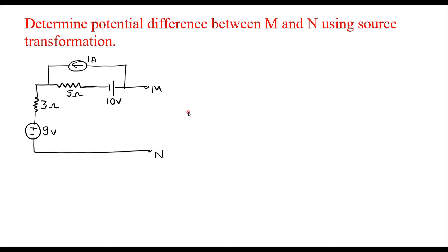Consider one example on source transformation. Determine potential difference between M and N using source transformation. This is the given circuit. We're supposed to find the potential difference between M terminal and N terminal.